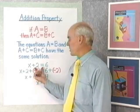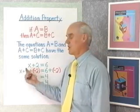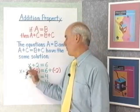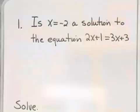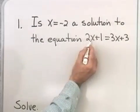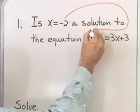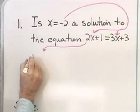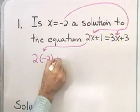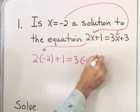x equal 4 is a solution to this equation because it's the number that, when replaced for the variable x, turns this equation into a true statement. 4 plus 2 is 6, so I have 6 equal to 6, a true statement. Let's look at our first problem: is x equal negative 2 a solution to this equation? We can find out by substitution — take x equal negative 2 and substitute it in for x into the equation. I have 2 times negative 2 plus 1 is equal to 3 times negative 2 plus 3.